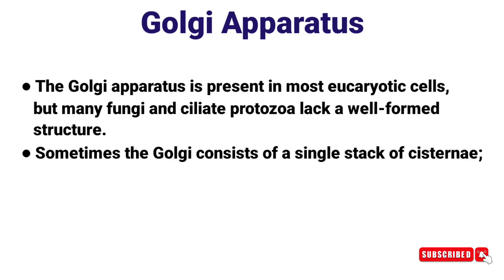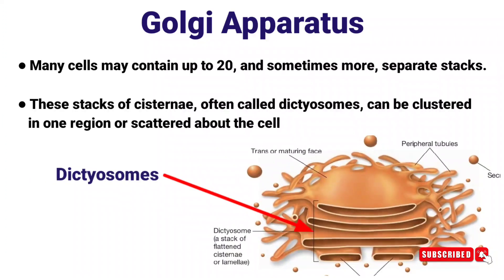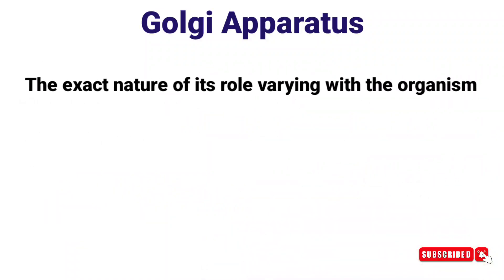The Golgi apparatus is present in most eukaryotic cells, but many fungi and ciliate protozoa lack a well-formed structure. Sometimes the Golgi consists of a single stack of cisternae; many cells may contain up to 20 or more separate stacks. These stacks of cisternae are often called dictyosomes, which can be clustered in one region or scattered about the cell, with their exact role varying with the organism.